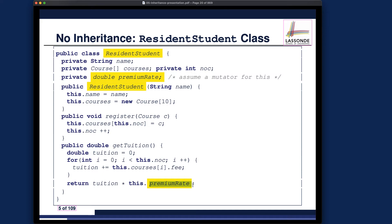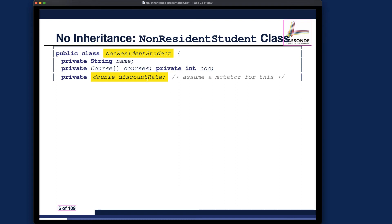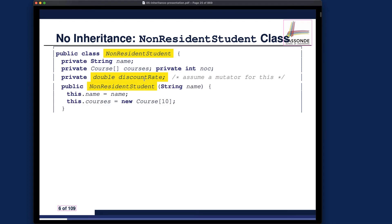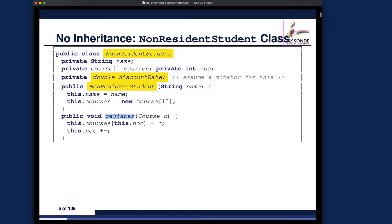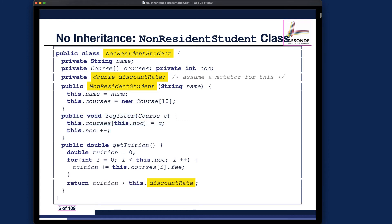Lots of duplicate code violates the single choice design principle — please review the earlier part of the first design if you've forgotten. For the NonResidentStudents class, we still have the same attributes repeated, discount rate rather than premium rates, a different constructor name, and a register method that is a complete duplicate from the ResidentStudents class. The getTuition base amount calculation is exactly the same; only the final multiplication — by discount rate rather than premium rate — is different.